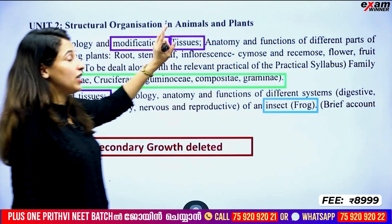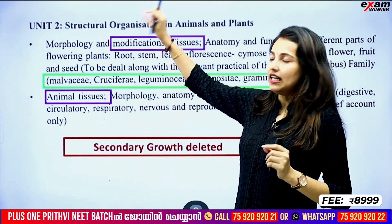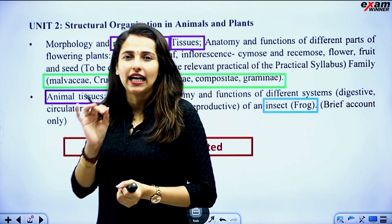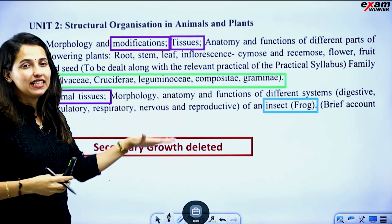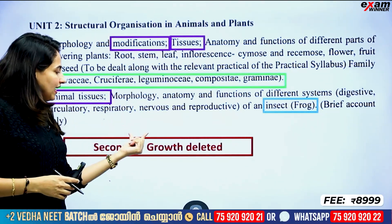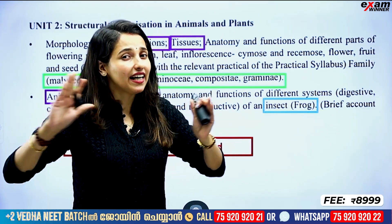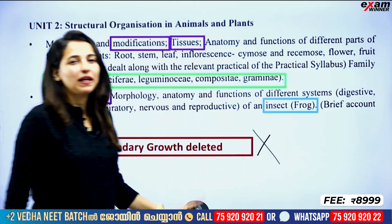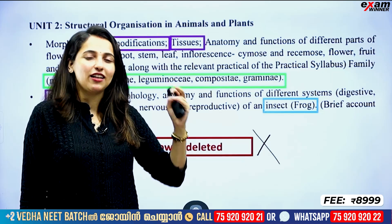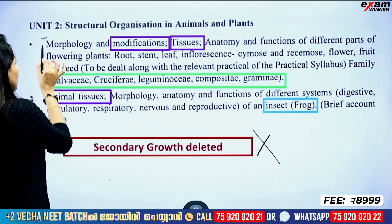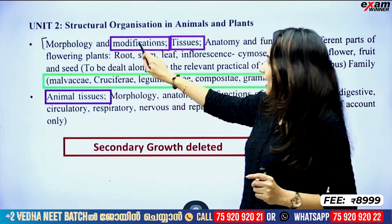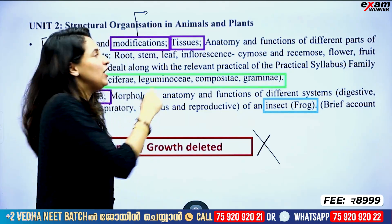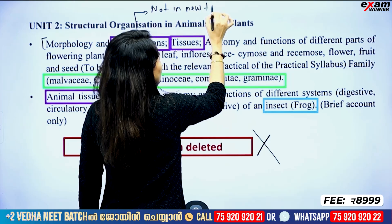This is Structural Organization in Plants and Animals — a unit called Morphology, Anatomy, and Structural Organization in Animals. If you want to talk about the changes, you will be very specific. You have three colors: one is violet, one is green, and one is red. The red box is completely deleted — you don't have to learn about it. The completely deleted topic is secondary growth. From anatomy, you will delete it.